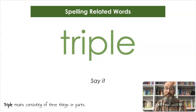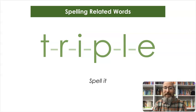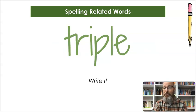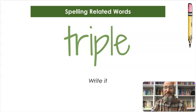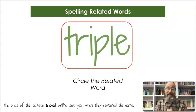The next word is triple. Triple means consisting of three things or parts. Count the syllables — tri-ple, triple. Let's spell it: T-R-I-P-L-E, triple. And let's write it: T-R-I-P-L-E. I'm going to circle the entire word — you'll see how it's related shortly. The price of the tickets tripled, unlike last year when they remained the same.